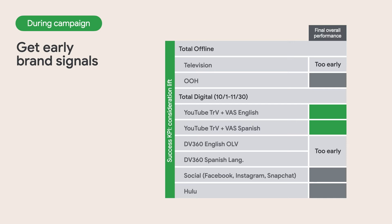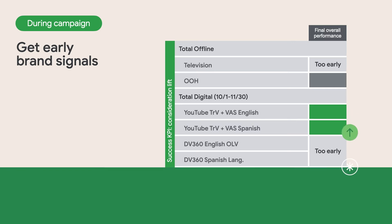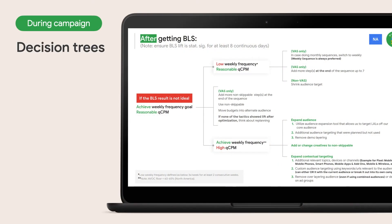AMAYA GARBAYO: For example, in this campaign, the early success of YouTube triggers shifts in budget to capitalize on that success. KEITH WASHINGTON: That sounds like a lot of moving parts. How do you ensure your team is able to keep up? AMAYA GARBAYO: In order to make all these optimizations in a systematic manner and as fast as possible, the Media Lab has developed Decision Trees. Decision Trees contemplate every possible outcome of all metrics we track in market and offer a blueprint of actions and approval protocols that will make sure we make decisions swiftly.